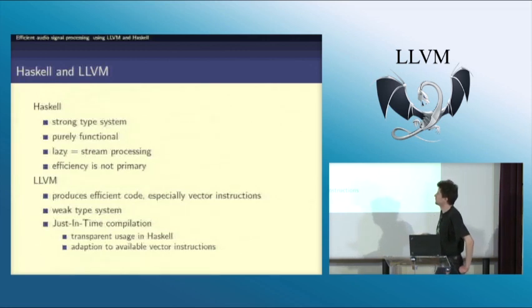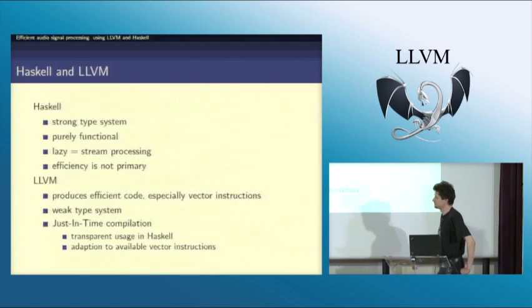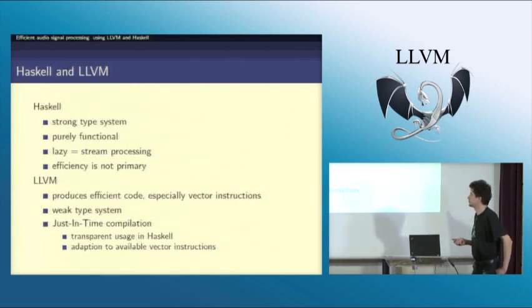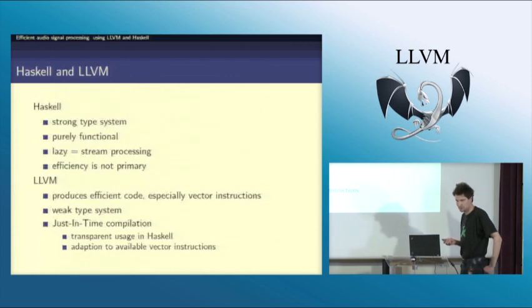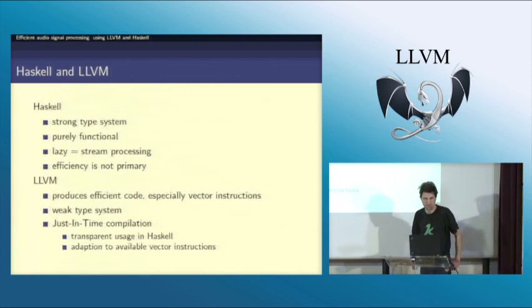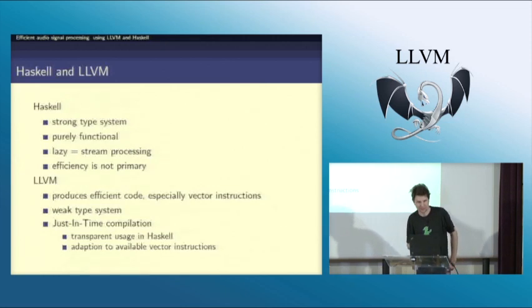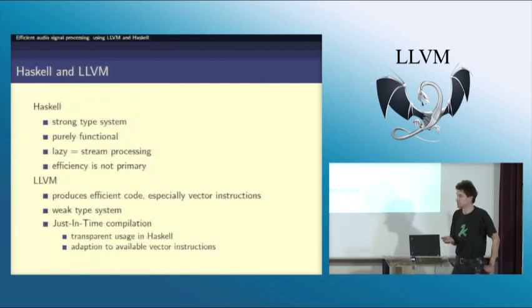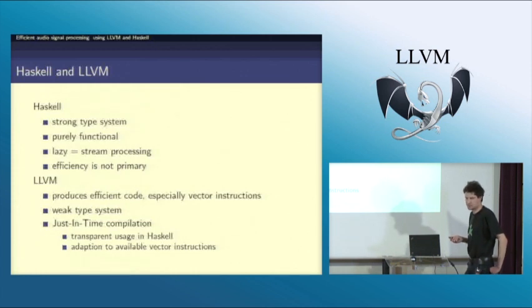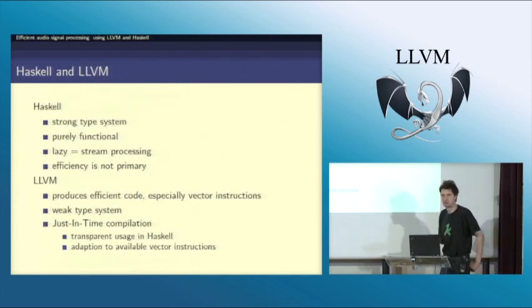Efficiency is not the primary goal of Haskell, and this is where LLVM comes in. I use LLVM in order to produce efficient code. I also use vector instructions a lot. LLVM is certainly not intended for having a strong type system, but what I use from LLVM is the just-in-time compilation, which allows me to transparently use LLVM code in my Haskell code.